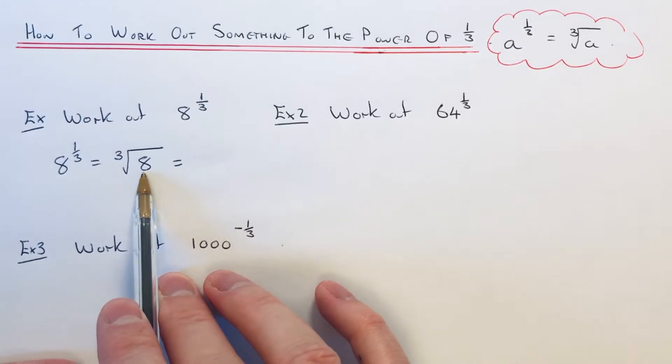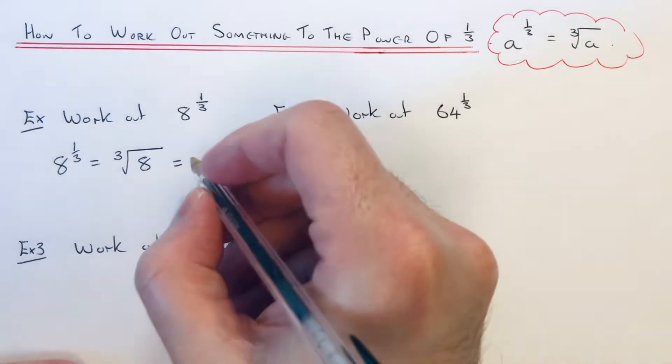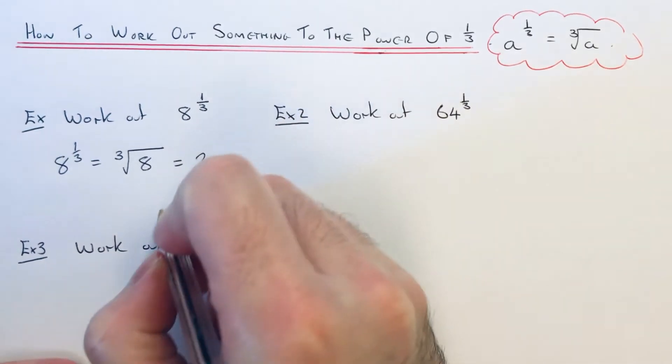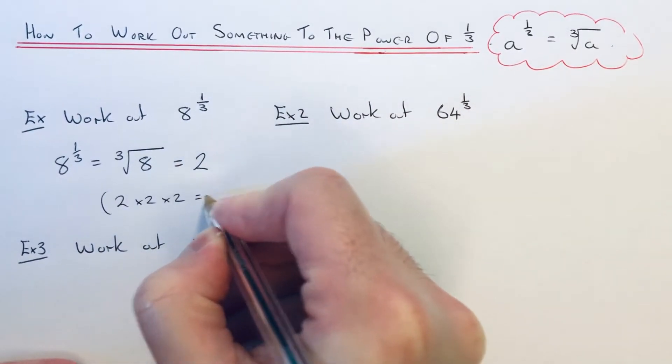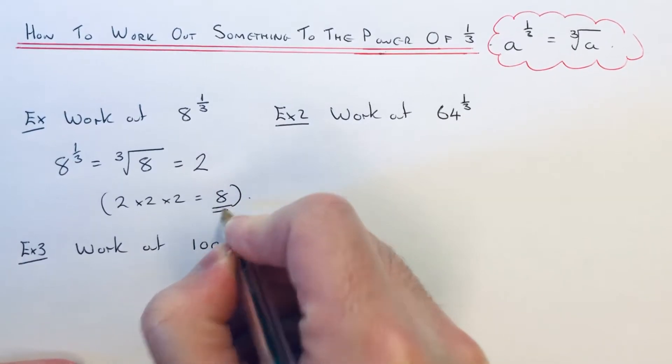So if you know your cube numbers this should be easy. The number we're looking for is two, because two times two times two gives an answer of eight.